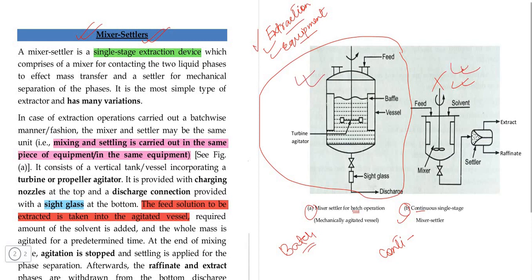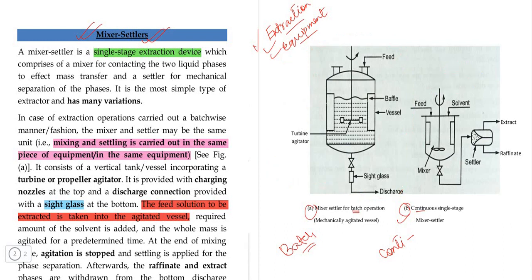This is the continuous process. I will talk about batch process. Which comprises of a mixer for contacting two liquid phases — two different types of liquid. I will mix them up.